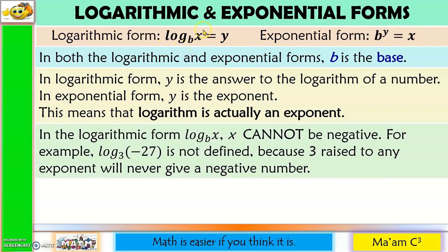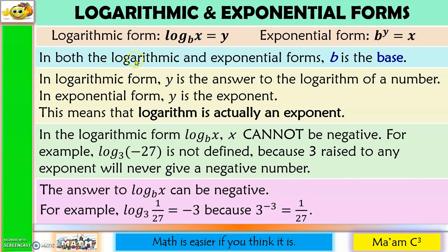In the logarithmic form, x cannot be negative. Why? Because there is no base raised to any number that will give you a negative number. So x cannot be negative. However, in the logarithmic form, the answer can be negative. Why? Because it is possible to have a negative exponent.